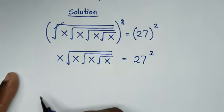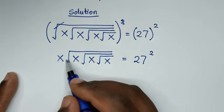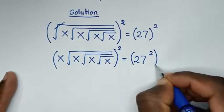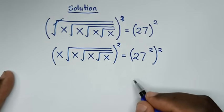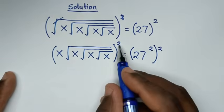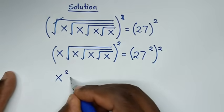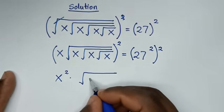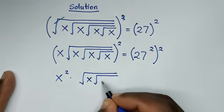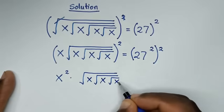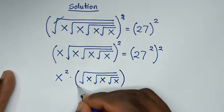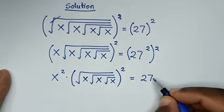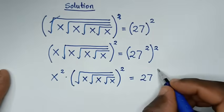Then in the next step, we'll remove this square root here, so we'll apply square on both sides — bracket square on both sides. Then here it will be x squared, so x squared times this. The result is square root of x under square root of x under square root of x, bracket squared, is equal to 27 to the power of 2 times 2, which is power of 4.